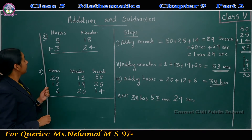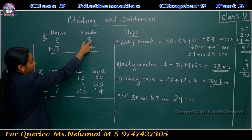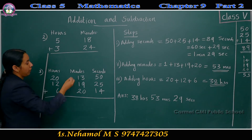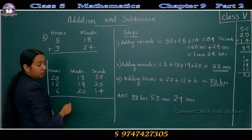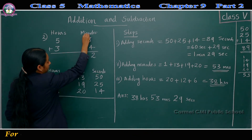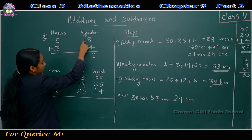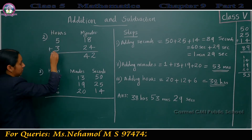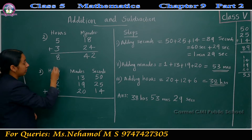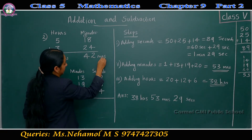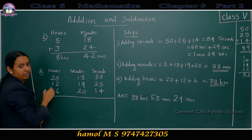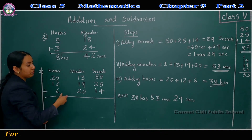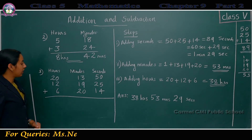Second question: 5 hours, 18 minutes plus 3 hours, 24 minutes. First, add minutes: 8 plus 4 is 12, write 2 carry 1. Then 1 plus 1 is 2, 2 plus 2 is 4 — giving 42 minutes. Then add hours: 5 plus 3 is 8. Answer is 8 hours, 42 minutes. Since 42 is less than 60, no need to split.